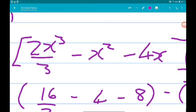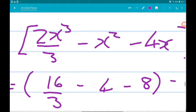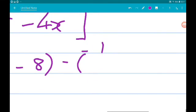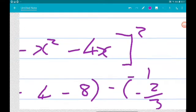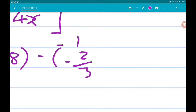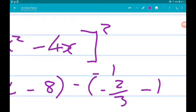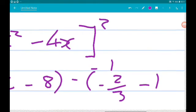Minus. Minus 1 cubed is minus 1. So we got 2 thirds times minus 1, so minus 2 thirds. Minus 1 squared is minus 1. And then minus 4 times minus 1. So that's going to give us add 4.